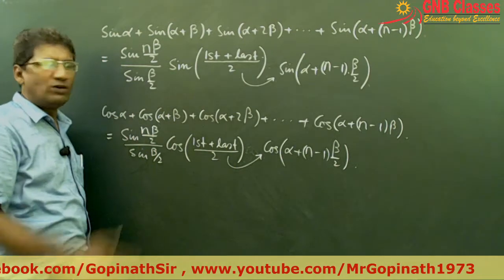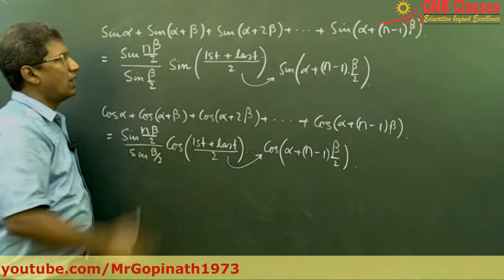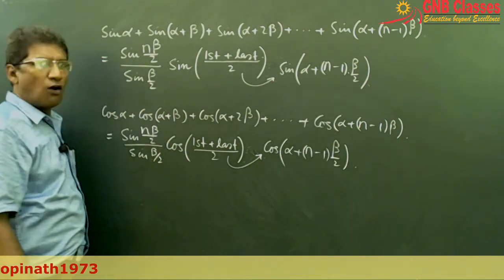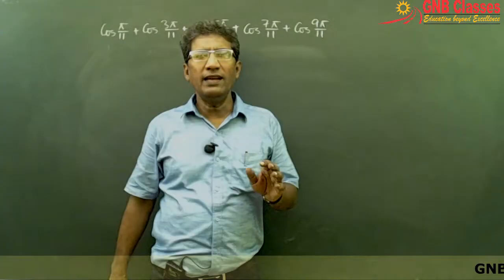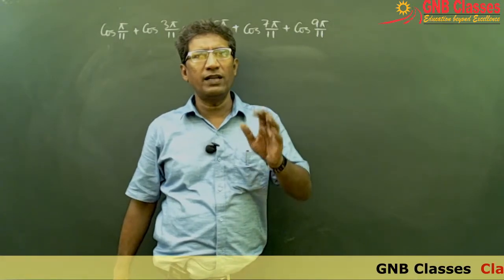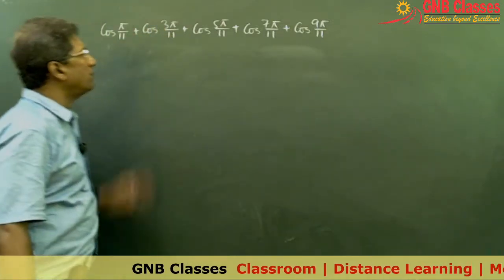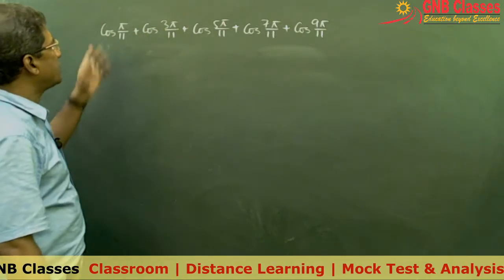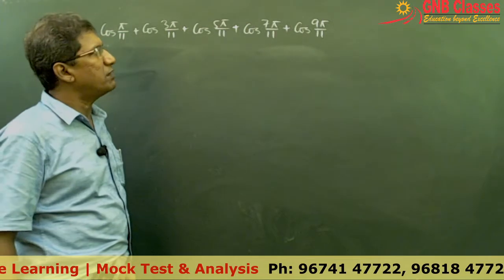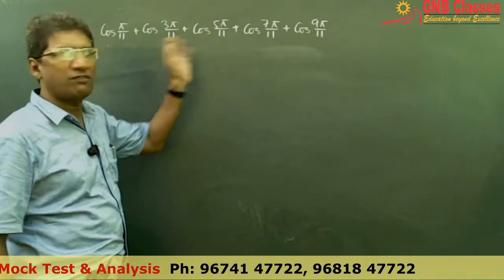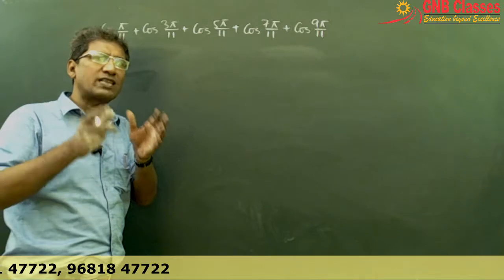Now let us move to some problems to illustrate these two formulae. For illustration of the cosine series formula, we have taken: cos(π/11) plus cos(3π/11) plus cos(5π/11) plus cos(7π/11) plus cos(9π/11), and we need to evaluate its value.